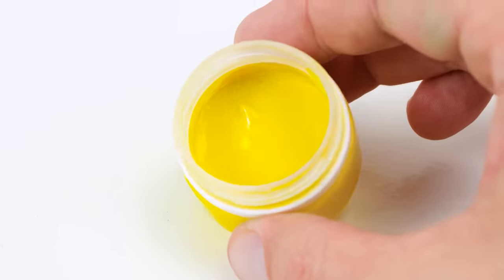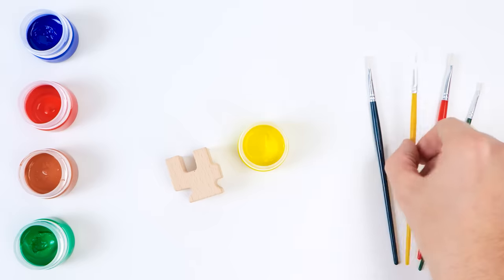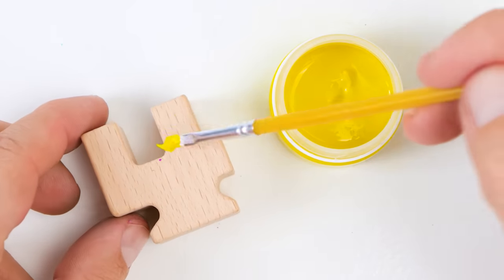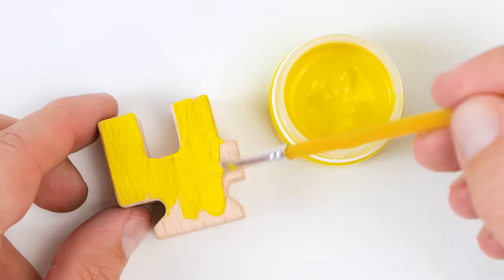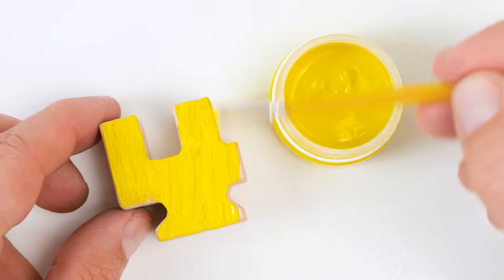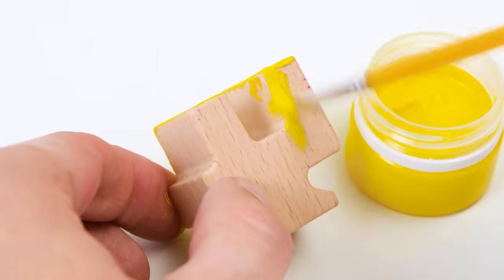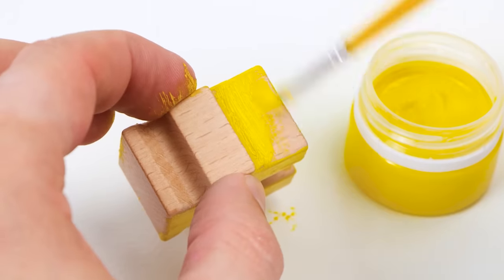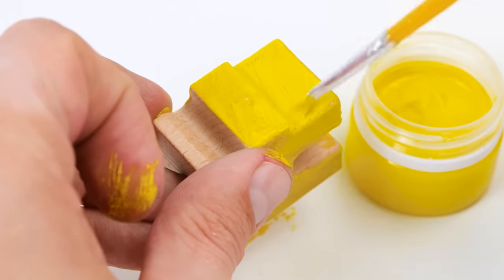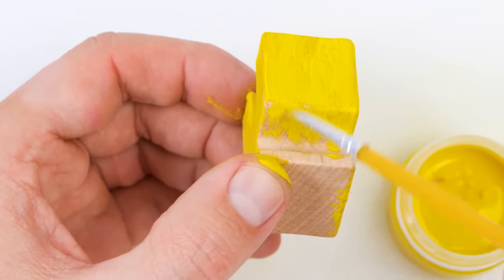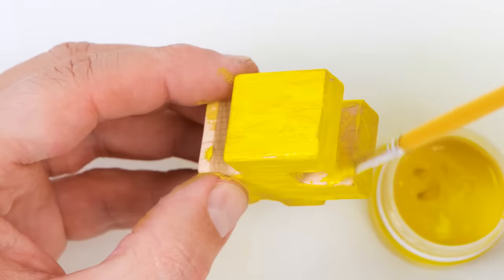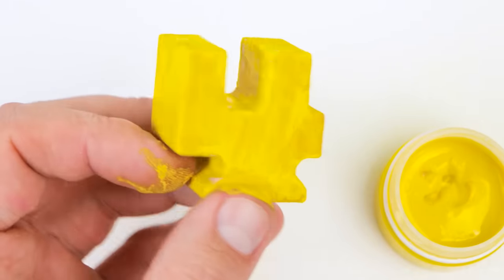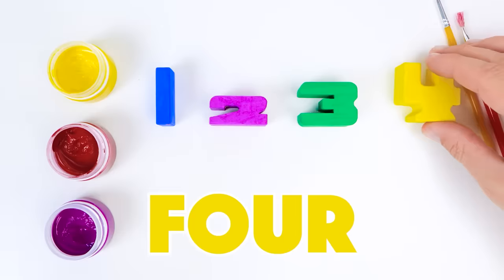What else is yellow, friends? Lemons, bananas, and corn. Yellow will make the four really stand out. Let's see how quickly I can paint it. Oh, it looks awesome. Good choice of color, Emily. Number four.